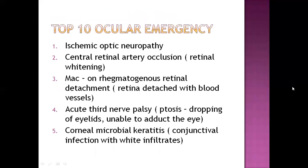There are top 10 ocular emergencies, divided on the basis of severity or priority. First is ischemic optic neuropathy, which is damage of eye nerves along with eye muscles. Second is central retinal artery occlusion, manifested by retinal whitening. Third is rhegmatogenous retinal detachment, where the retina detaches with blood vessels. Fourth is acute posterior communicating artery aneurysm, also called ptosis, manifested by drooping of the eyelid and inability to abduct the eye. Fifth is corneal microbial keratitis, in which conjunctival infection with white infiltrates is seen.